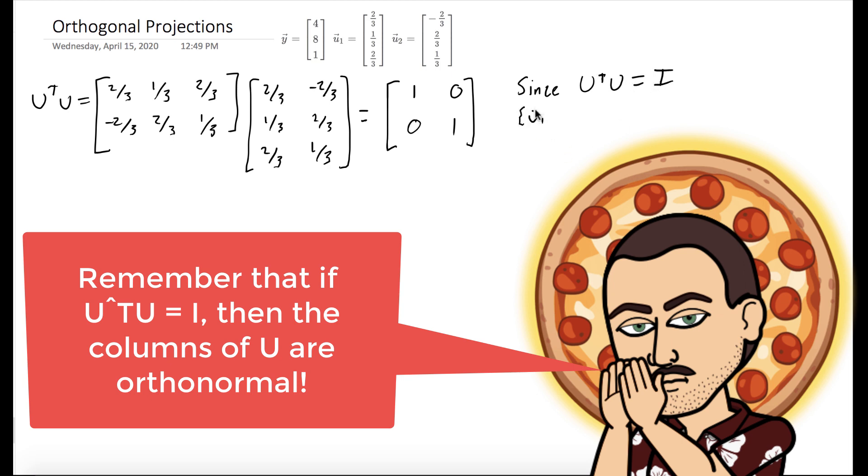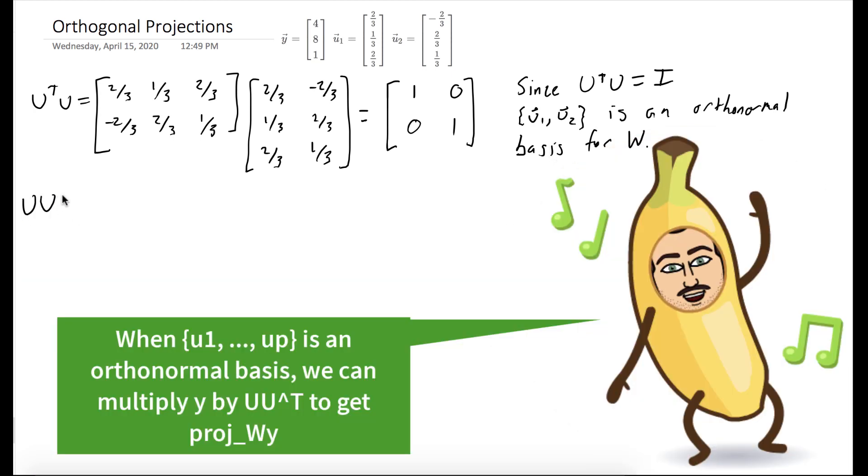then the columns of U, which are u1 and u2 in this case, form an orthonormal basis for the subspace that they span, which we call W in this example. So u1, u2 is an orthonormal basis for W.